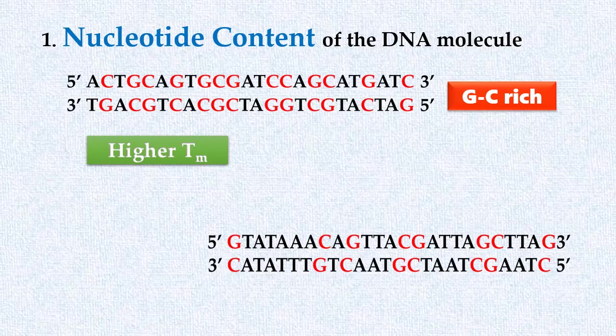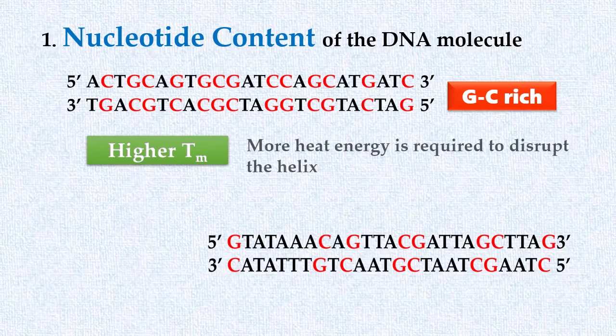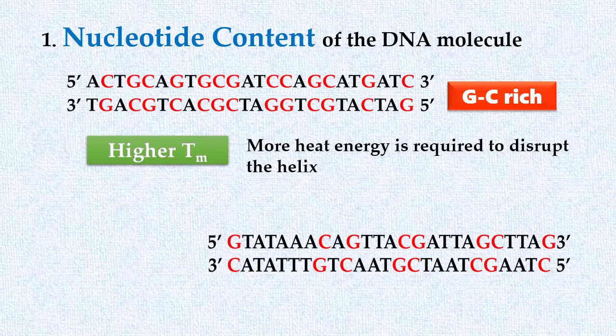This is because more heat energy is required to disrupt the stable base stacking interaction in this molecule. Thus, the melting temperature of DNA is influenced by its GC content.